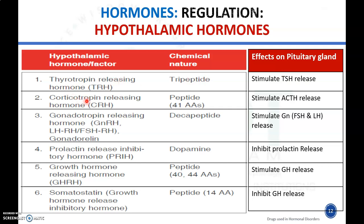The second hypothalamic hormone is corticotropin releasing hormone (CRH). CRH released from the hypothalamus stimulates the pituitary gland to release ACTH, which then stimulates the adrenal glands to produce adrenal hormones. The third is gonadotropin releasing hormone (GnRH), also known as LHRH, FSHRH, or gonadorelin. GnRH released from the hypothalamus stimulates the pituitary gland to release gonadotropins — FSH and LH — which then stimulate the gonads to produce estrogen, progesterone, and testosterone.